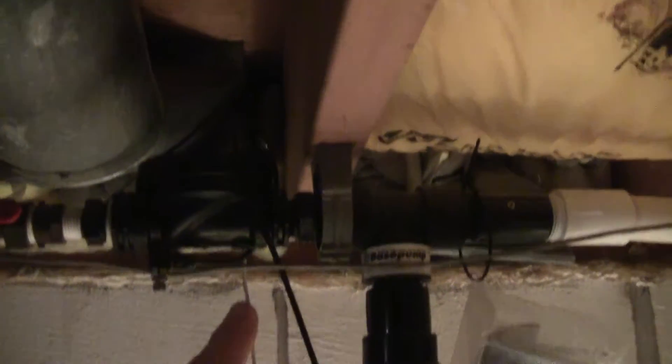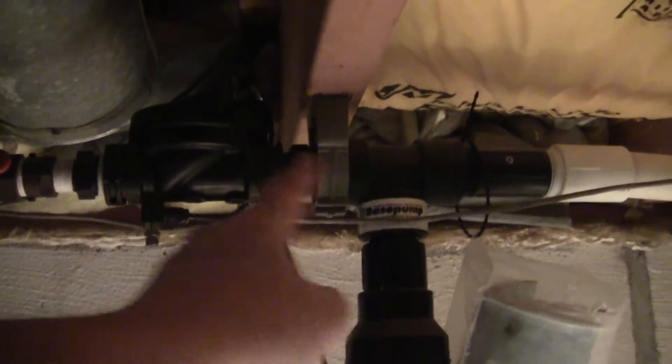It opens the valve, and then the city water pressure goes through this little chamber here and creates a vacuum. So for every one gallon of city water that flows through, it sucks out two gallons of water out of the sump. When you lose power, chances are you don't lose city water pressure.